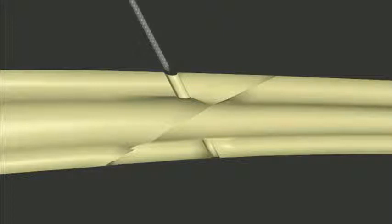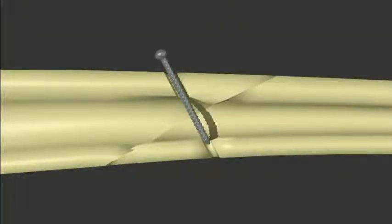The screw is then introduced into the hole. It will glide through the glide hole in the first cortex before engaging the pilot hole in the second cortex.